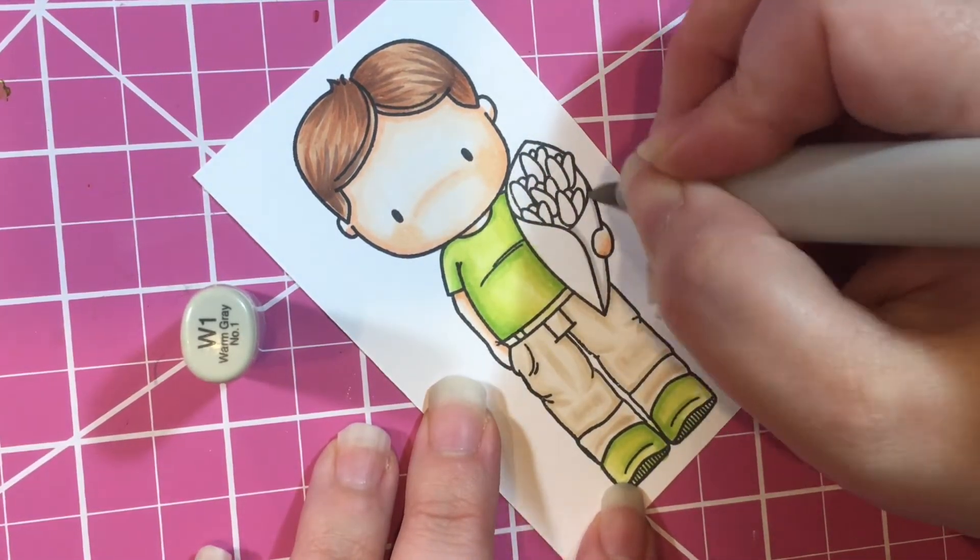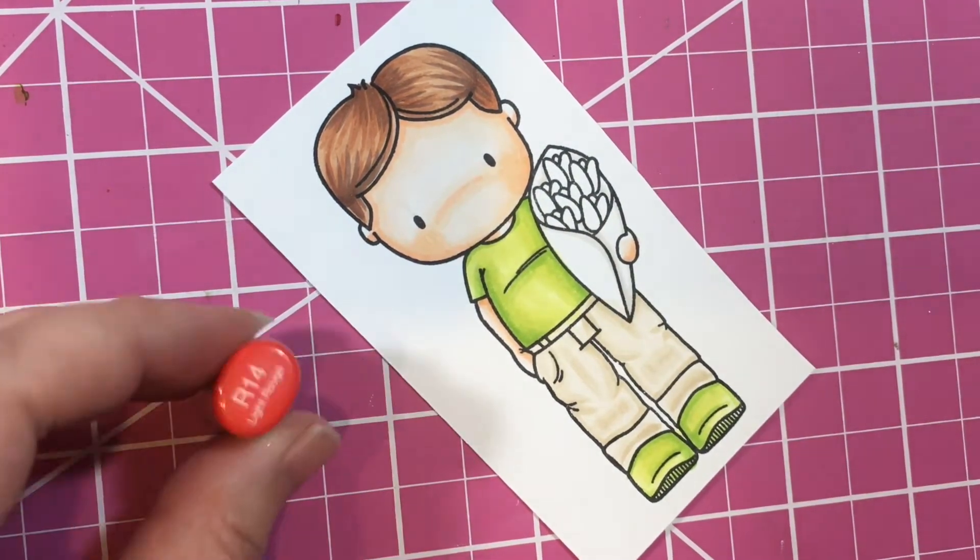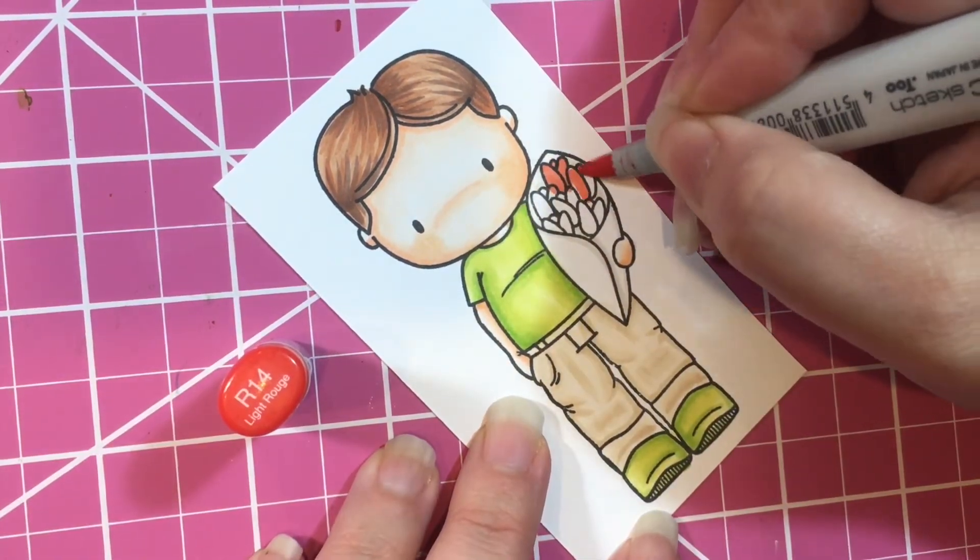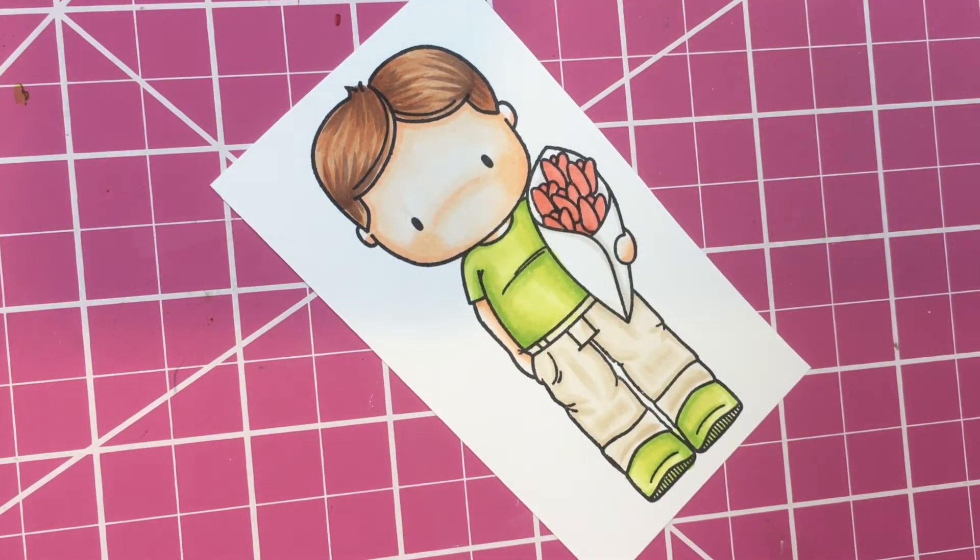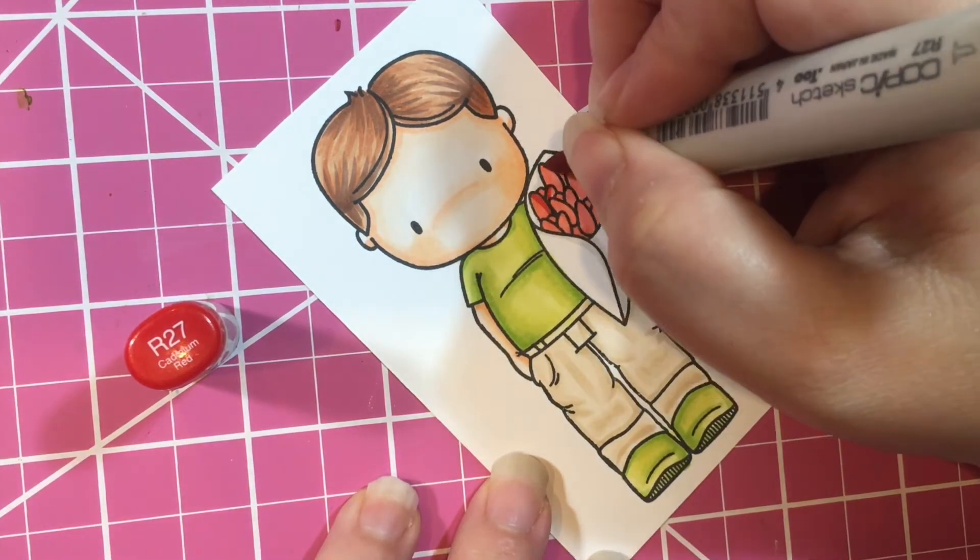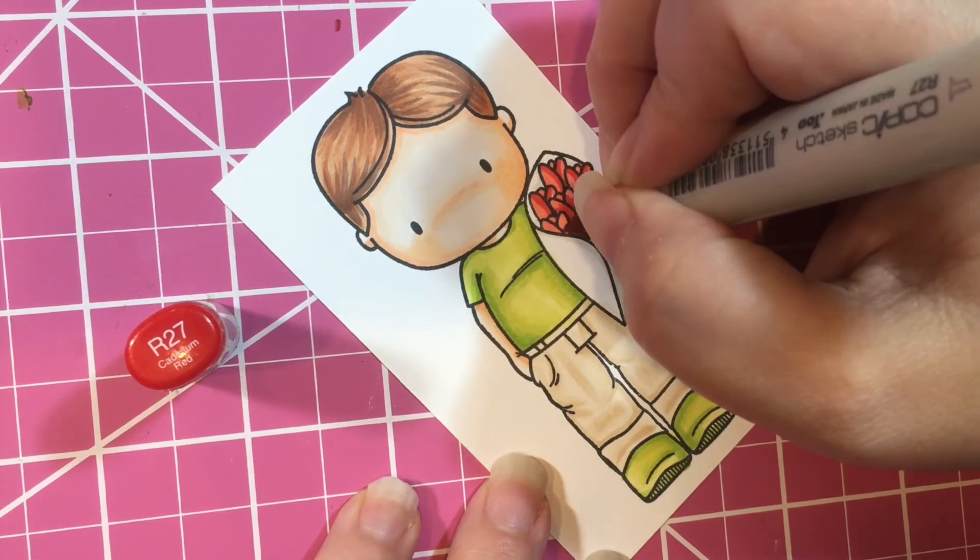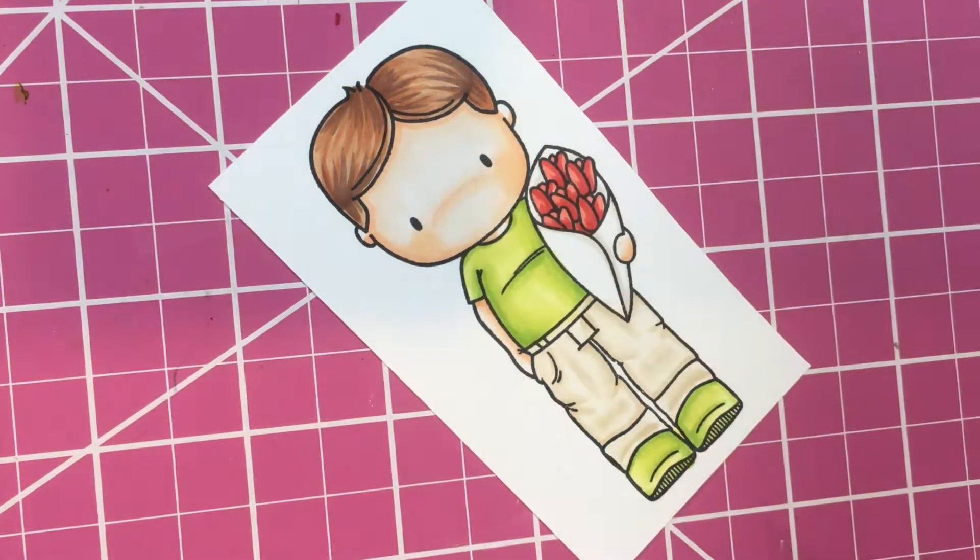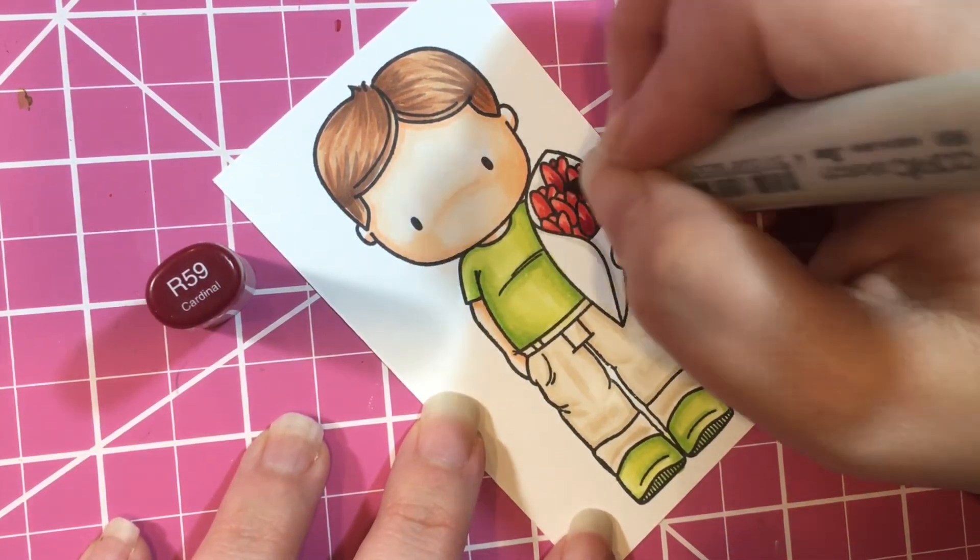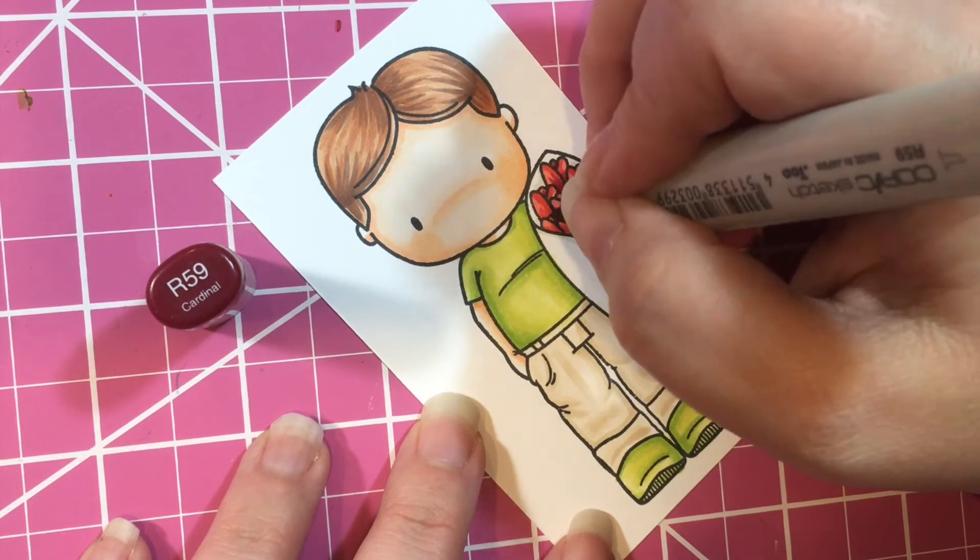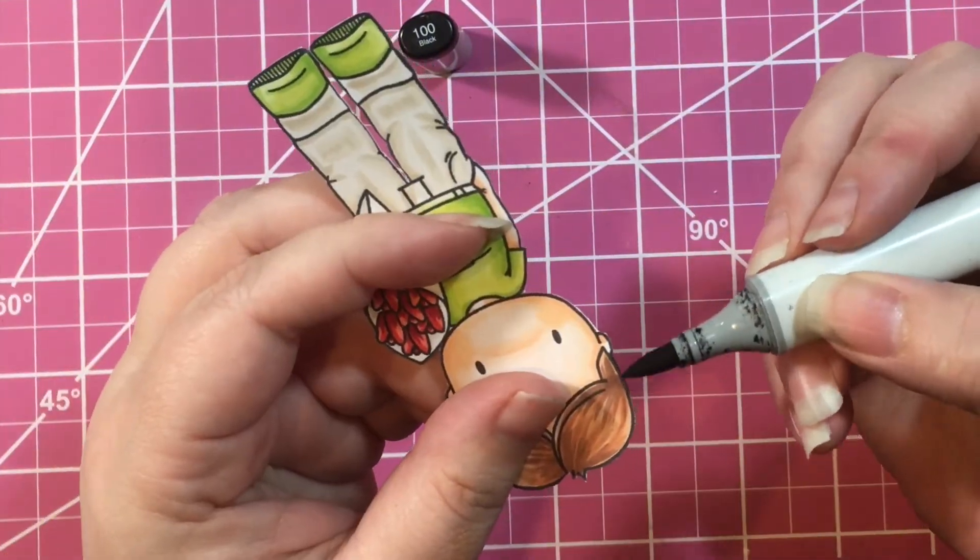I wanted the wrapping for the tulips to just be white, so I just used a little W1 just to add a little bit of color and depth. He's got to have red tulips because tulips are usually red. I know they come in other colors but red is usually standard. I started with the lightest color and then I'm working dark. I like to use R59 to give a really nice deep color on my red combos.